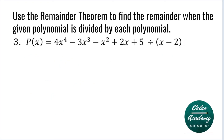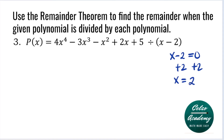Question number three: P of X is equal to 4X to the fourth minus 3X cubed minus X squared plus 2X plus 5, divided by X minus 2. Our divisor is X minus 2, so we will have X minus 2 equals 0. Adding 2 to both sides, our X value is 2. So now we will evaluate P of 2.